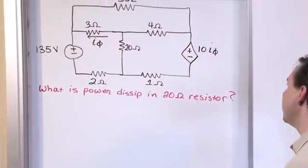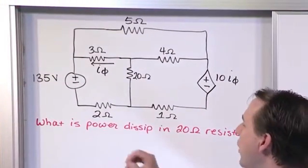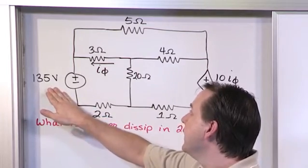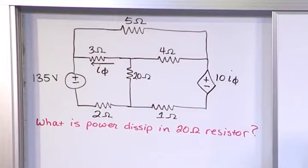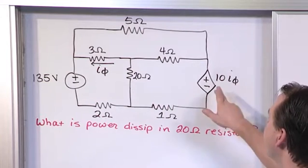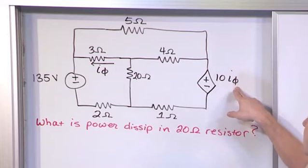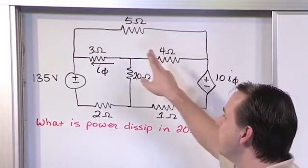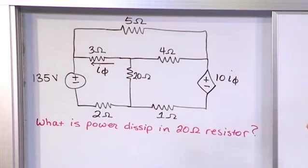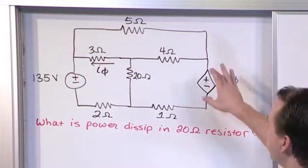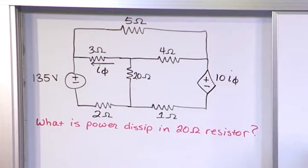Here we have a circuit which really is not that difficult to deal with. We have a 135 volt source, a resistor network, and then we have a dependent voltage source on the other side of the circuit. The voltage on the terminals of this guy is 10 times a current that we're calling I5, just like before. This time I5 is defined to be flowing this direction through the 3 ohm resistor right there.